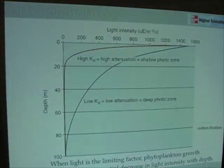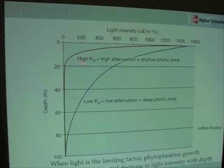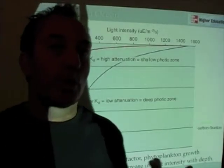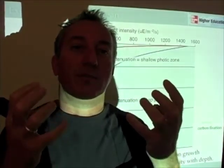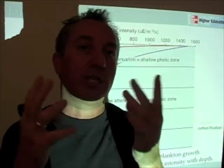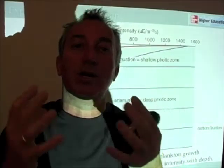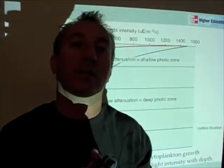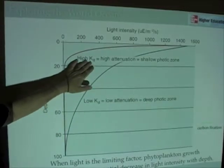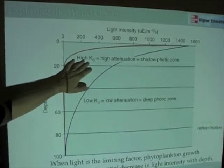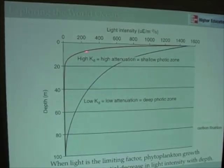Looking at two conditions from Figure 7-28: in a water column with lots of attenuation, the absorption of light depends on how many absorbers and scatterers are present — suspended microbes, inorganic sediments, and other material. This is expressed as the quantity K_D. If there are lots of absorbers and scatterers, we have a high K_D, very rapid attenuation, and a very shallow euphotic zone.